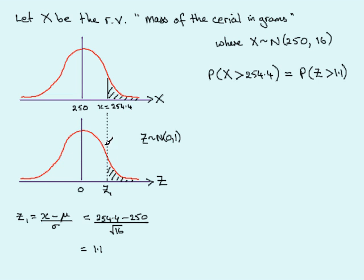Now, knowing that the whole area comes to 1, then to find this area, all I need to do is subtract it from 1. So in other words, the probability of Z being more than 1.1 standard deviations is the same as 1 minus the probability that Z is less than 1.1.